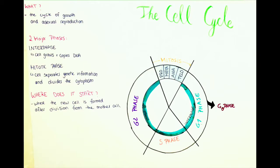The cell cycle is the cycle of growth and asexual reproduction of a body cell. It has two major phases: the interphase and the mitotic phase. The interphase is shown in turquoise and the mitotic phase in neon orange in the diagram. The interphase is the phase in which the cell grows and copies its DNA, and the mitotic phase is where the cell separates the genetic information and divides the cytoplasm — giving us two daughter cells from one mother cell.